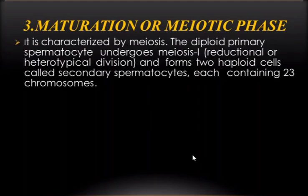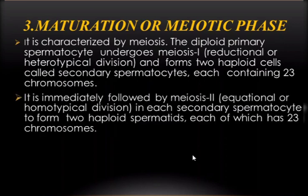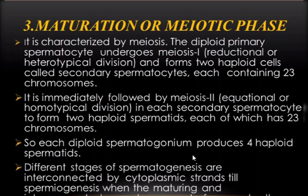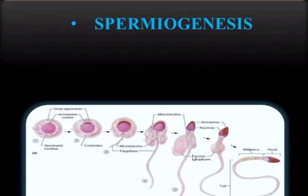The maturation or meiotic phase is characterized by meiosis. The diploid primary spermatocytes undergo meiosis I and form two haploid cells called secondary spermatocytes, each containing 23 chromosomes. This is immediately followed by meiosis II in each secondary spermatocyte to form two haploid spermatids, each with 23 chromosomes. So each diploid spermatogonium produces four haploid spermatids. Different stages of spermatogenesis are interconnected by cytoplasmic strands until the maturing interconnected gametes separate from each other.